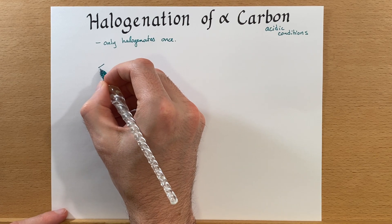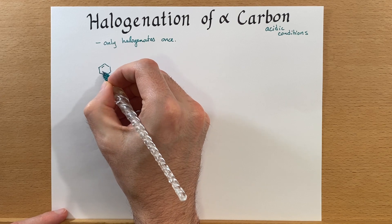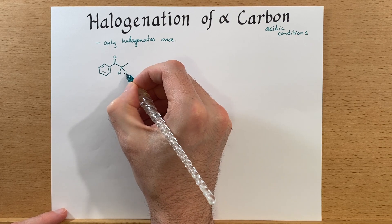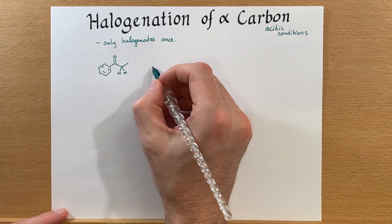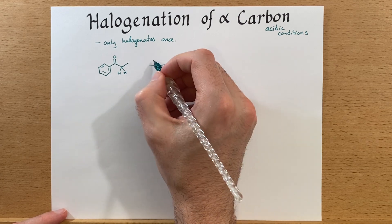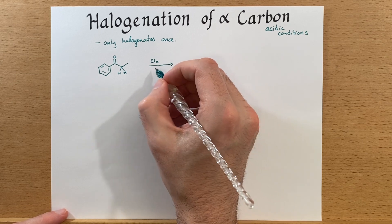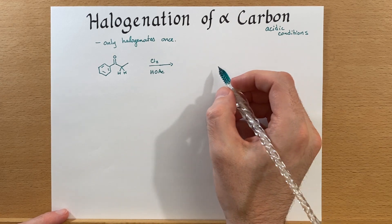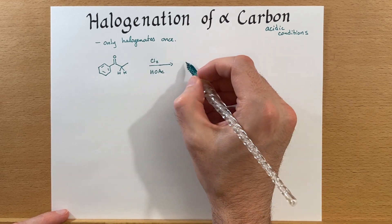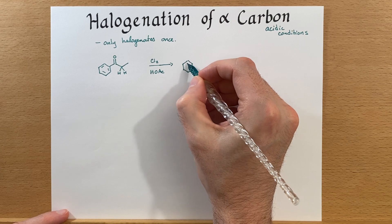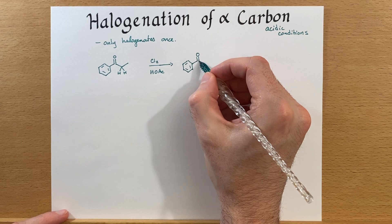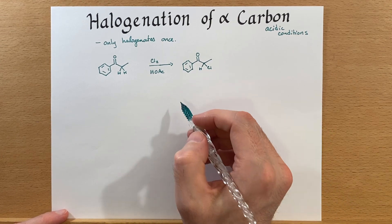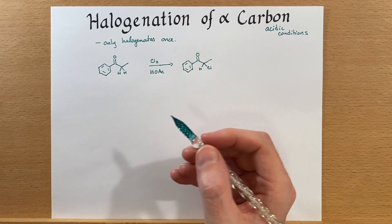Let's go back to the same substrate we looked at previously, since it is possible to do more than one halogenation. We've got two hydrogens here. Let's change up the halogen and we'll use chlorine this time. In this case, we're going to add in some acid — we're going to use acetic acid. Our product will only halogenate one time, so we're going to leave a hydrogen on there and have a chloride there. Only once. Now, let's look at the mechanism to see why that's the case.